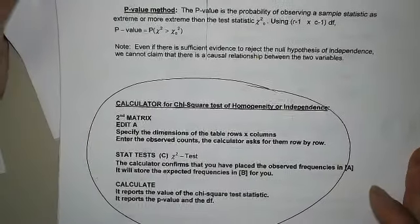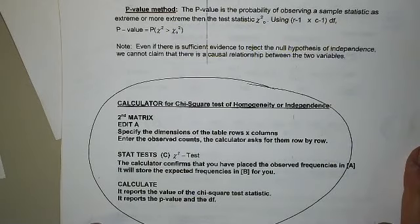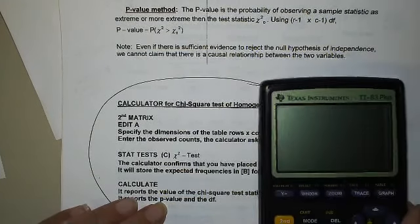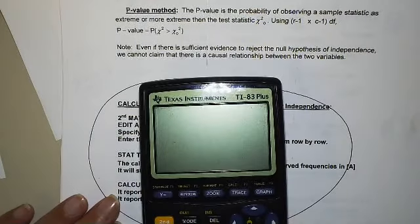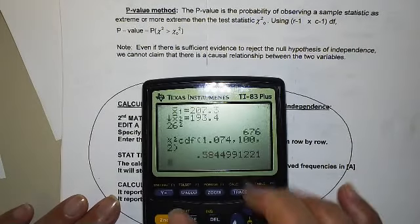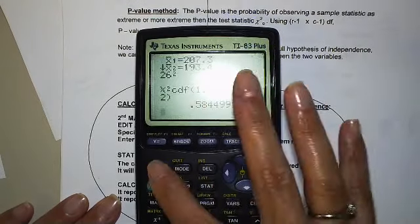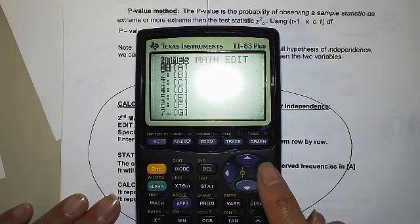And then on the next page, it gives you what the chi test statistics should be. Chi naught. And on the bottom of page 8, it gives you the calculator commands for you to do this on the calculator. So if you don't want to do this by hand, do it on the calculator where the calculator finds the expected matrix for you. Let's do it for our matrix. So it says go to second matrix edit A. Let's go there. Second matrix, which is right here.